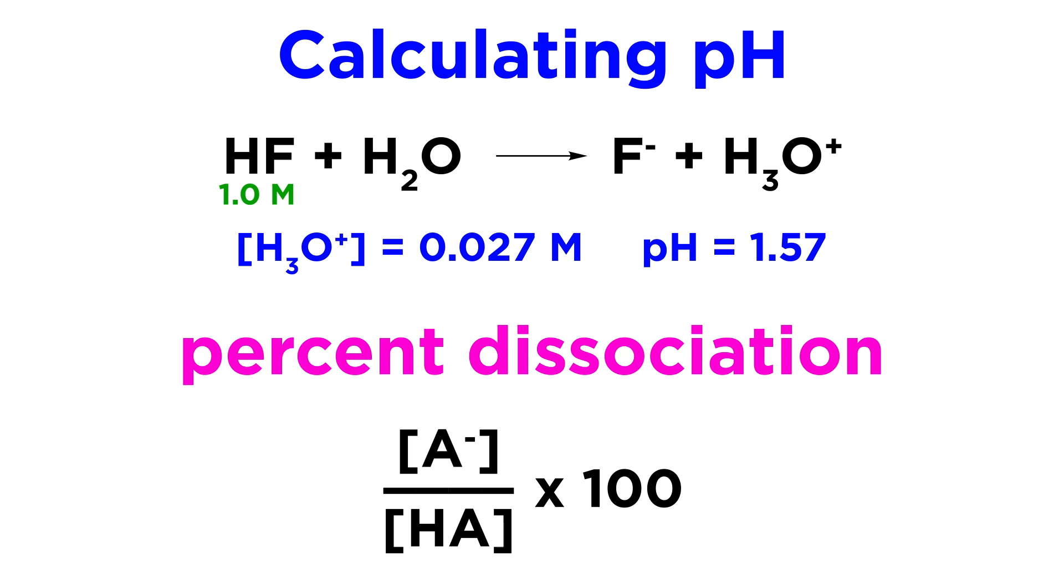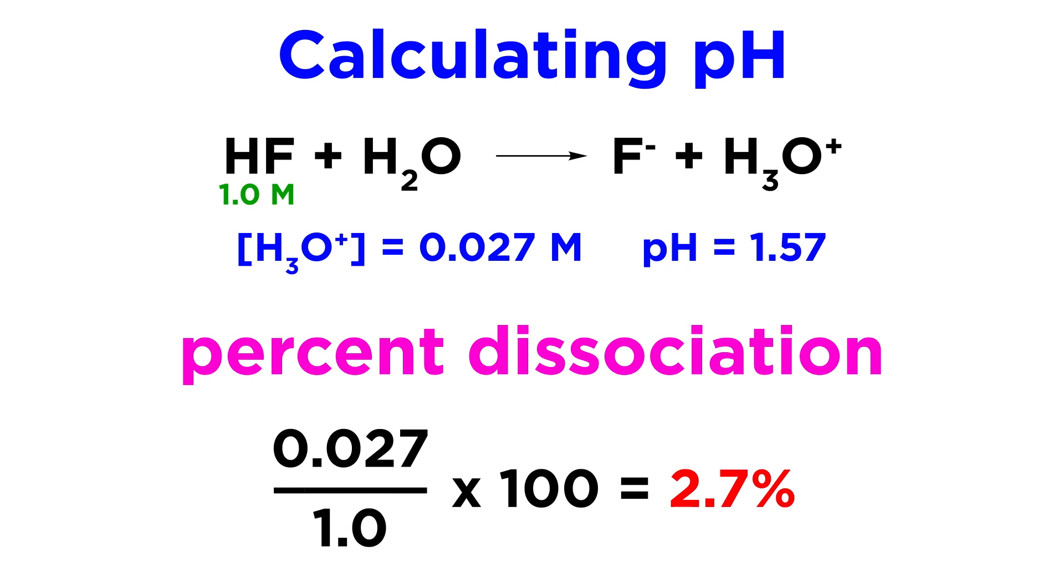the hydronium concentration is 0.027 molar. This represents the dissociation, so this value goes on top, over the initial concentration of 1, times 100, and we get 2.7%. This means that 2.7% of the acid molecules actually dissociate.